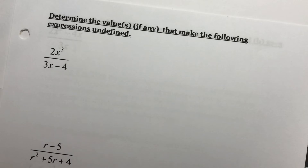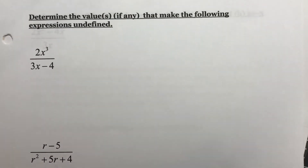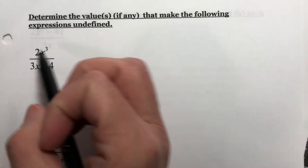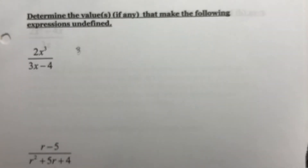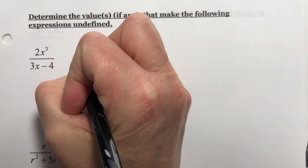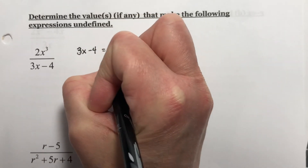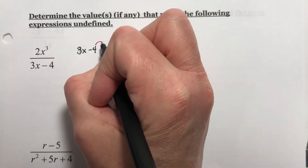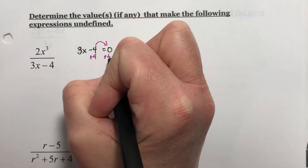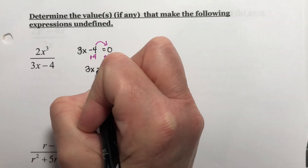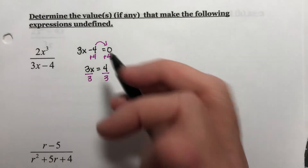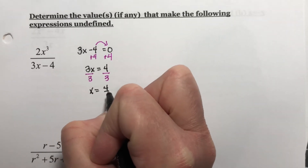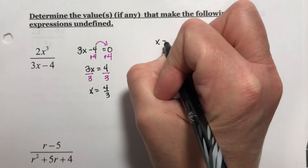So let's look at this problem: determine the value or values, if any, that make the following expression undefined. The top plays no part, so we set 3x minus 4 equal to zero and then we just solve this. I need to move the 4 over, so I add 4 to both sides. That gives you 3x equal to 4. Divide both sides by 3, and you get x equals 4 thirds. So what value makes it undefined? x equals 4 thirds.